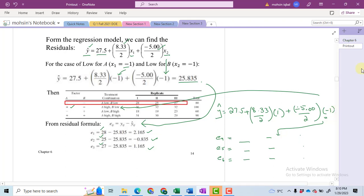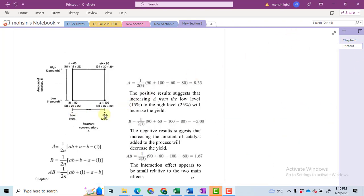Now I will take you to the experimental values. Here you can see that A high and B low, we got these three values: 36, 32, and 32.